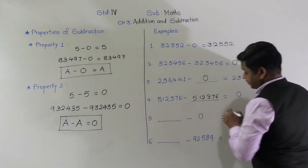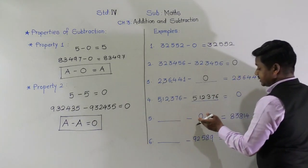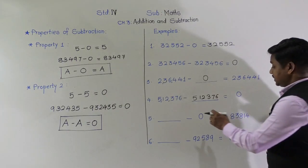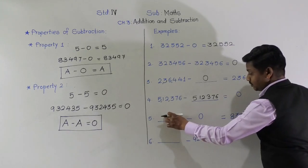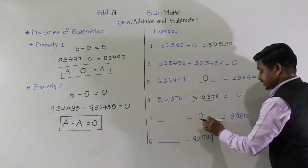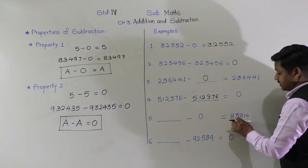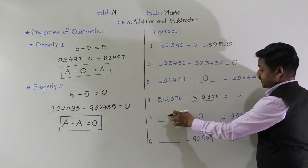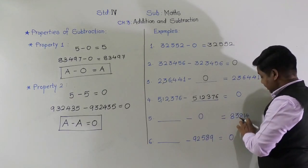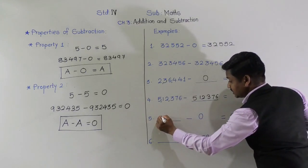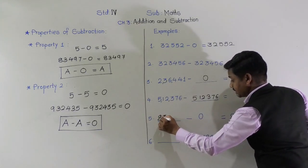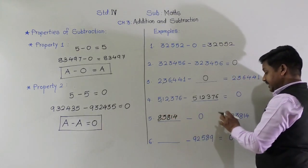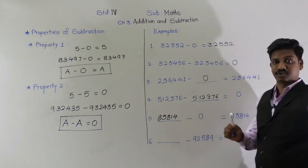Question 5: blank minus 0 equals 83,814. This is an unknown number from which 0 is subtracted, and we got the answer 83,814. When we subtract 0 from any number, we get that number itself. So the unknown number is 83,814. That is, 83,814 minus 0 equals 83,814.